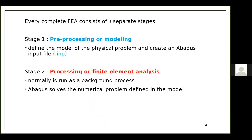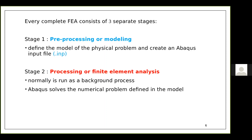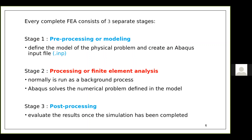The second stage is processing or the finite element analysis — a background process where the computer solves the problem defined in the model. Once processing is done the output file is generated. The third stage is visualization or post-processing, where you see the results graphically — animations, contour plots, images — there are a lot of options available.